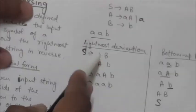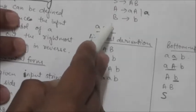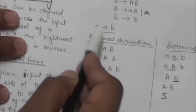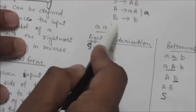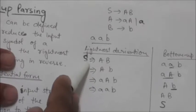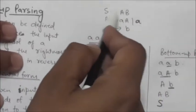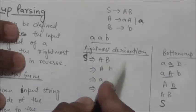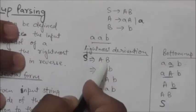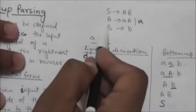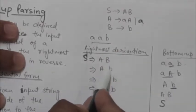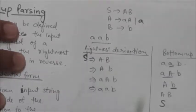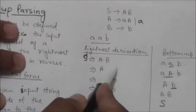We need to find the rightmost derivation of the string of terminals 'aab'. Starting from the start symbol S, we apply S → aB to get aB. The rightmost non-terminal in this string is B, so we apply B → b, replacing B with terminal b, giving us the string ab.